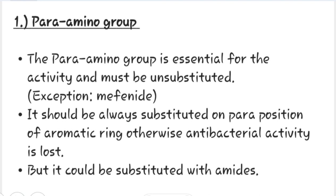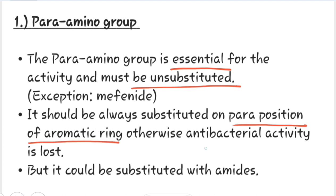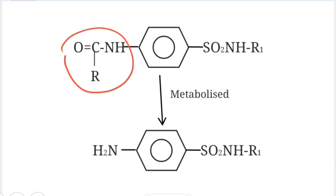The para amino group is essential for activity and must be unsubstituted, but the exception is mephanide, where the amino functional group is missing from the benzene nucleus. It should always be on the para position of the aromatic ring; otherwise antibacterial activity is lost. However, it could be substituted with amides — amides are themselves inactive but get metabolized and converted into free amine, which gives biological response, forming an active compound.